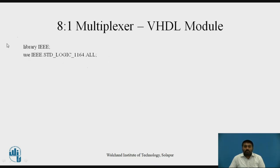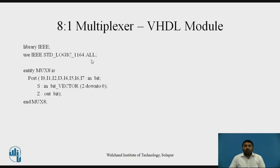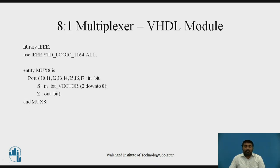First, we have to include the libraries — the library is declared and the package being used is mentioned. After that, we declare the entity with its entity name and write the port declaration inside it. The port contains input and output signals. Inputs are taken as individual bits, the select line S is a bit vector of 2 down to 0 (3 bits), and Z is the output as a single bit. Then we write end entity.